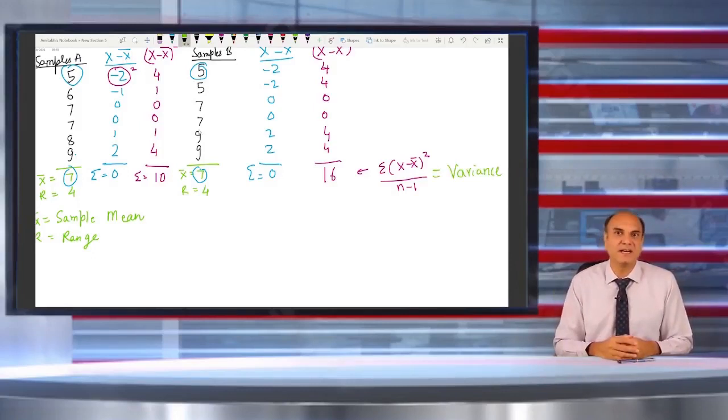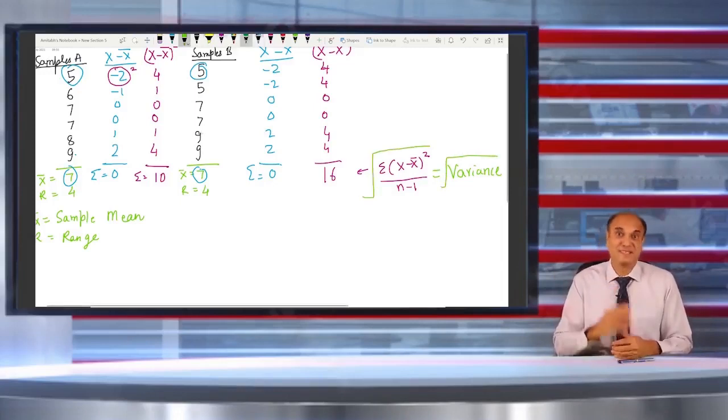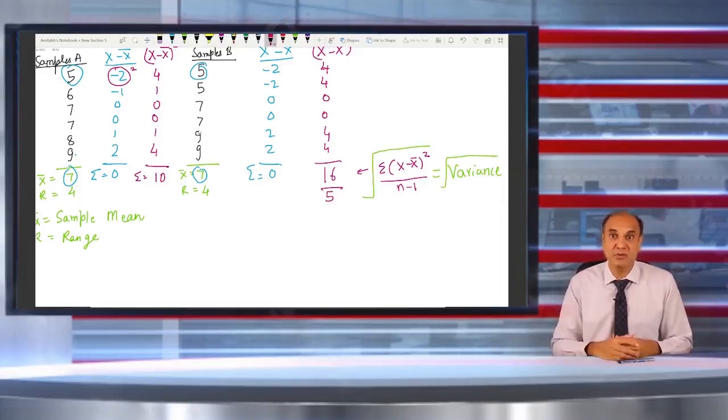So the standard deviation formula would be square root of sum of squares of all the distances of all the data divided by n minus 1. So that is for the sample if you are dealing with the samples.